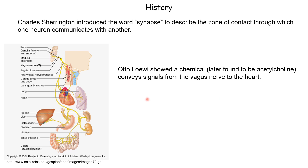Let's think about what that experiment could have been that showed the communication between motor neurons and heart muscles was through a chemical. This was a very clever and very simple experiment that did not require any complicated equipment. I'll describe this experiment on the next slide, but I urge you to pause your video here and think about it for a few minutes — see if you can come up with a simple experiment that can show that communication could be by chemical means.